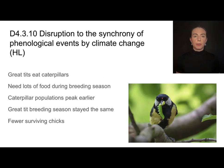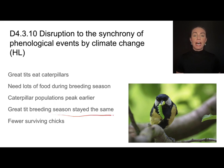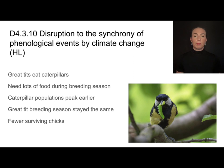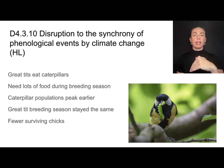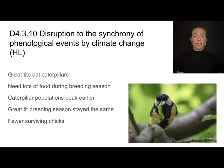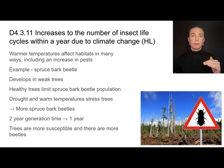Another example is the great tit, a bird that eats caterpillars. It needs to increase its food intake during breeding season, which is controlled by daylight hours. That season has stayed the same, but caterpillar populations are based on temperature, so those populations have started to peak earlier in the year. When the bird is ready for breeding season, the caterpillar population has already peaked and started to decline, leaving insufficient food to sustain all the chicks, resulting in fewer surviving chicks.